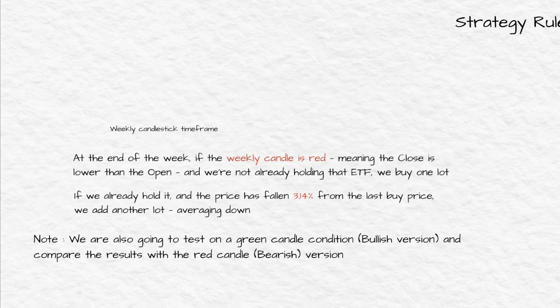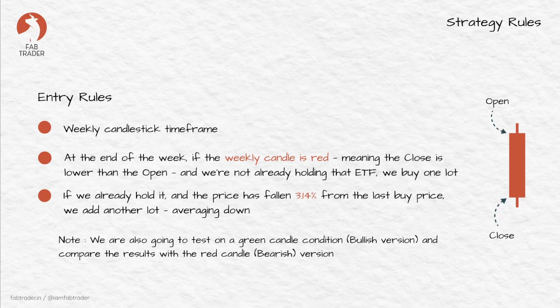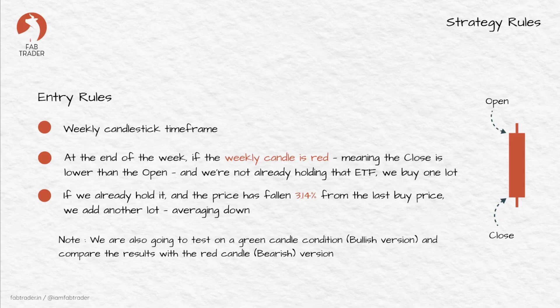Let's now talk rules — and trust me it couldn't be simpler. The entry rule is pretty straightforward. We are working only on the weekly candlestick timeframe. At the end of the week after the market closes on Friday, for the ETFs we have selected, we check the chart. If the weekly candle is red — meaning the close is lower than the open for that week — and we don't already have this ETF in our holding, we go ahead and buy one lot. If we already hold it, we check if the price has fallen 3.14% from the last buy price, and if so, we buy one more lot — this is the averaging down concept.